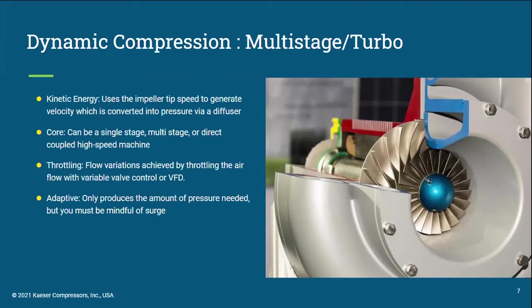One thing that needs to be considered when using a dynamic blower is surge, which is when air flows backwards into the air end. This can damage the air end and lead to premature failure. We will take a look at some performance curves in just a bit to show you what the surge line looks like. These dynamic blowers are often preferred at larger municipalities due to their ability to generate large flow rates. Smaller plants can also see benefits due to their minimal maintenance and longevity of service.